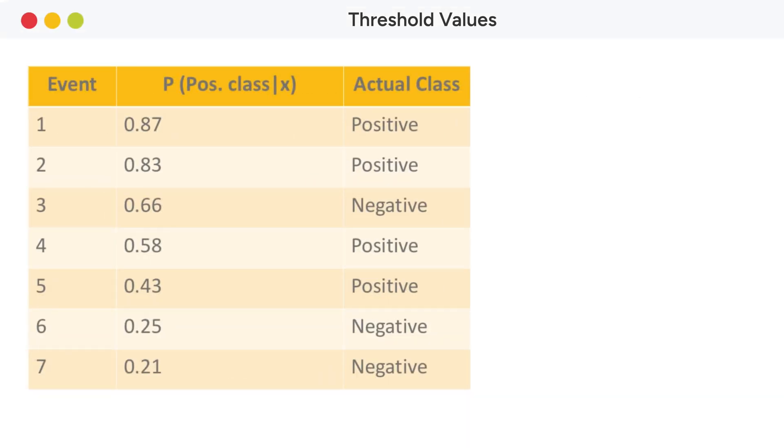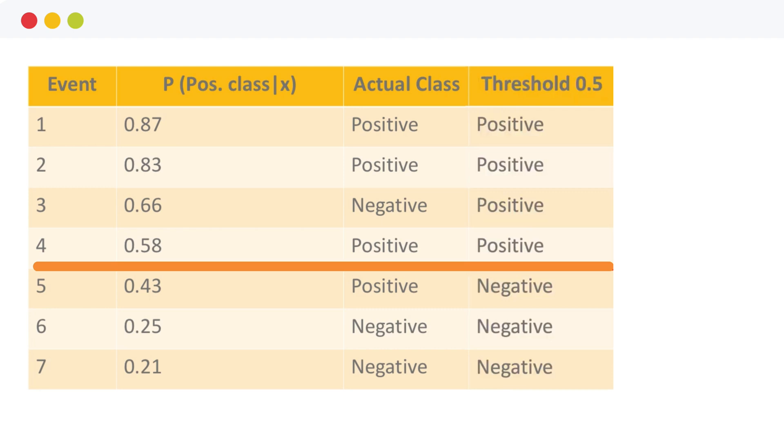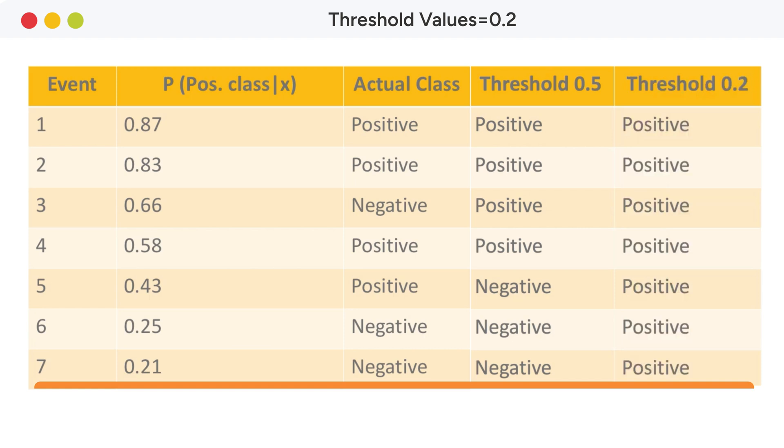Here you see a number of events ordered by their probabilities to belong to the positive class. By default, the value of the classification threshold is set to 0.5, and here are the corresponding assignments to the two classes. Next, decrease the threshold value, for example, to 0.2. Now, you see that the class assignment changes for the data points with the probability for the positive class falling between 0.2 and 0.5.